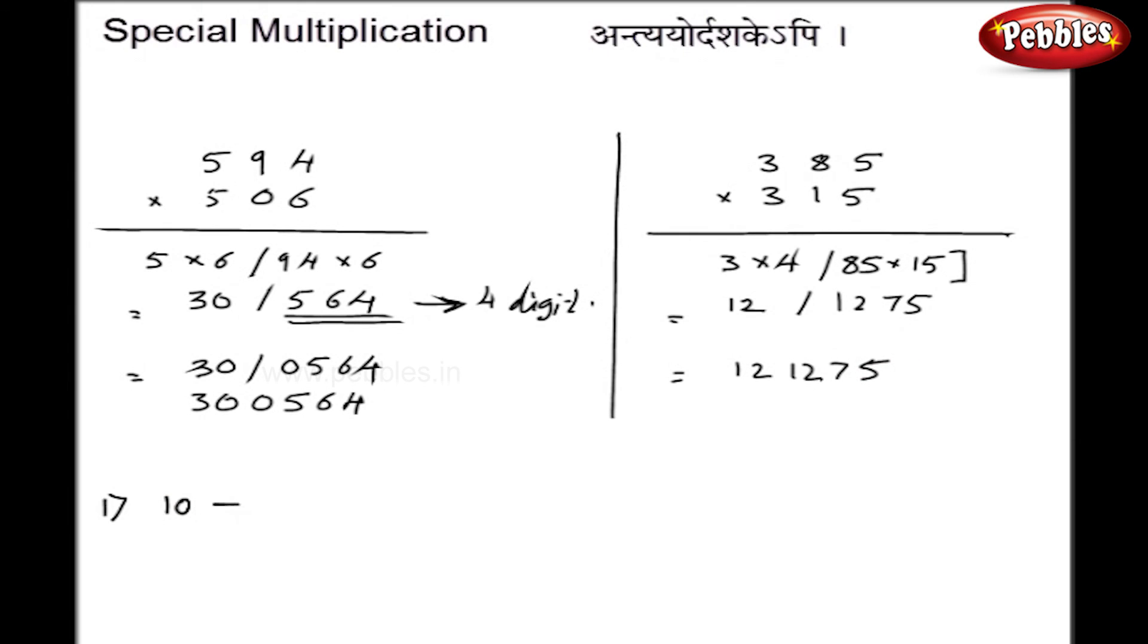You just have to remember that whenever the addition is 10, there are 2 digits to your right hand side of the answer. And whenever the addition is 100 of the last digits, you should have 4 digits to the right hand side of your answer.